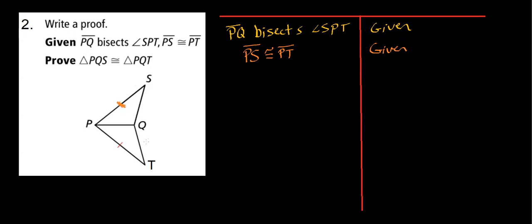So we know that this segment and this segment are congruent. So we're trying to prove triangle PQS is congruent to triangle PQT. So we already have one of our three congruencies that we need with that given right there.